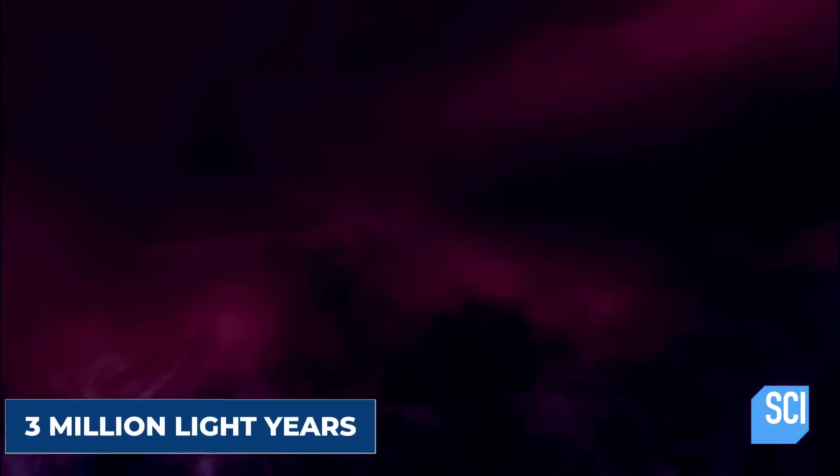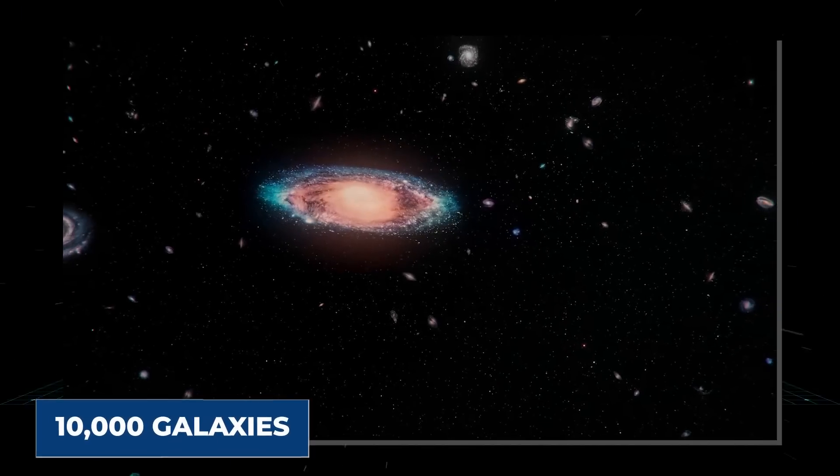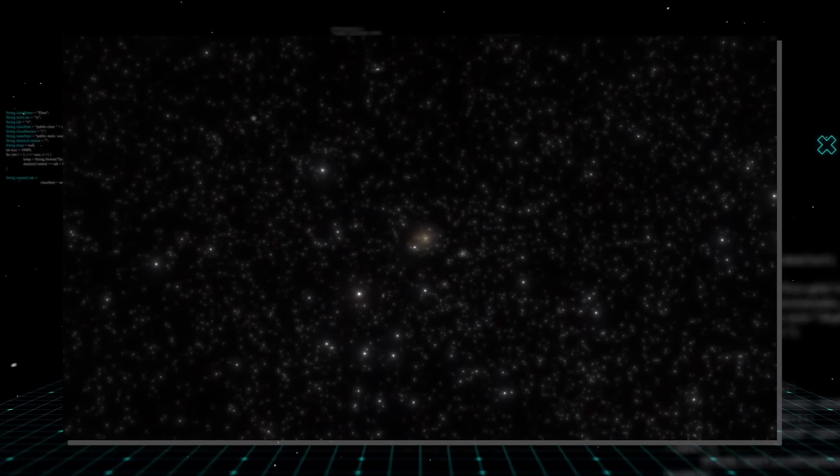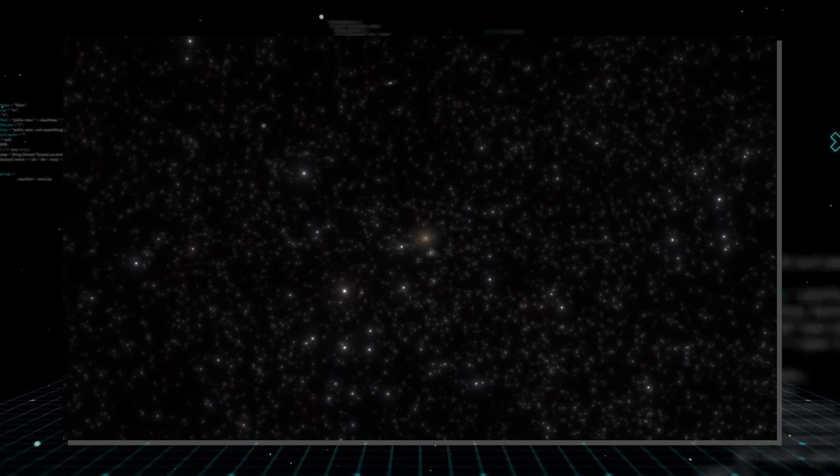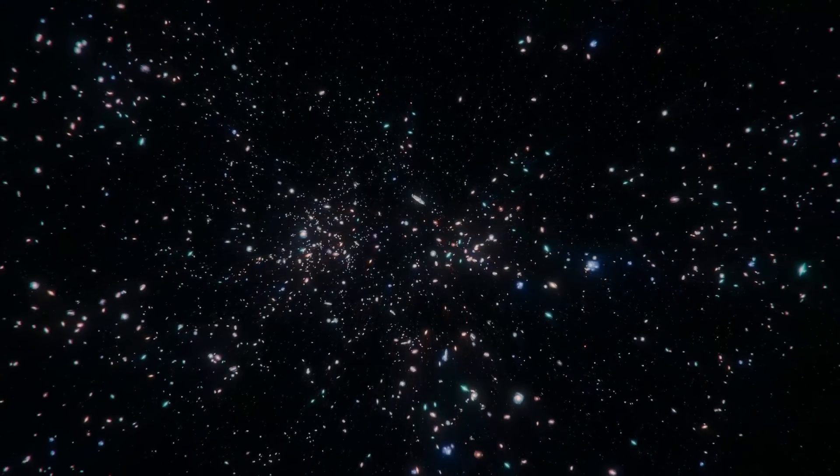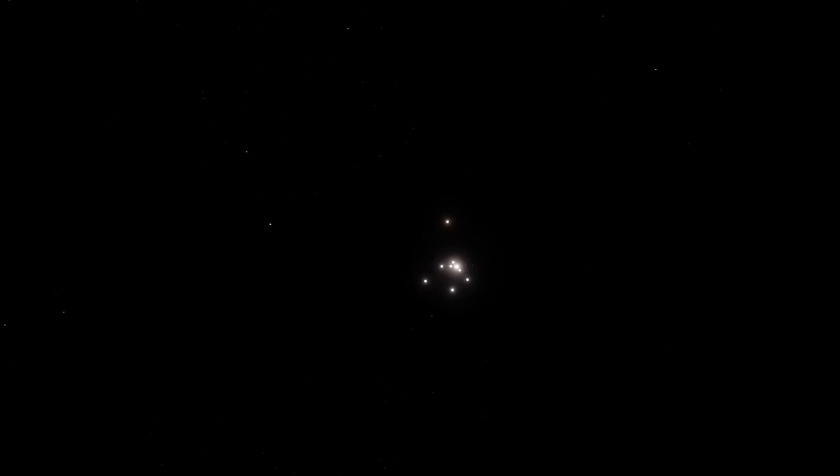Looking at the volume of the Boötes Void, it should contain about 10,000 galaxies when considering that the average distance between galaxies elsewhere in the universe is a few million light-years. The thing about this supervoid is that it's yet another reminder of the vastness and sparseness of the cosmos. The universe that we see is too impossibly large for us to comprehend. Our place within it is a tiny, insignificant microscopic speck.